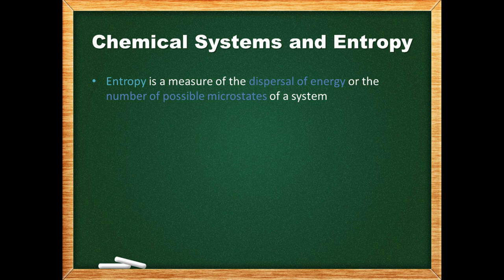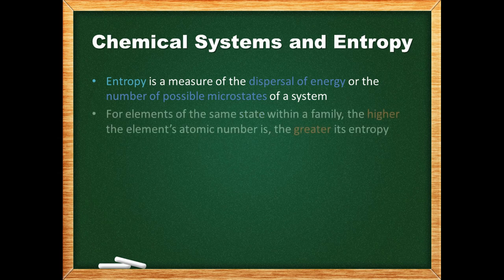Simpler things have lower entropies because they have fewer possible configurations or microstates. For elements of the same family, the higher the element's atomic number, the greater its entropy. This is because more electrons provide more variability in positions.